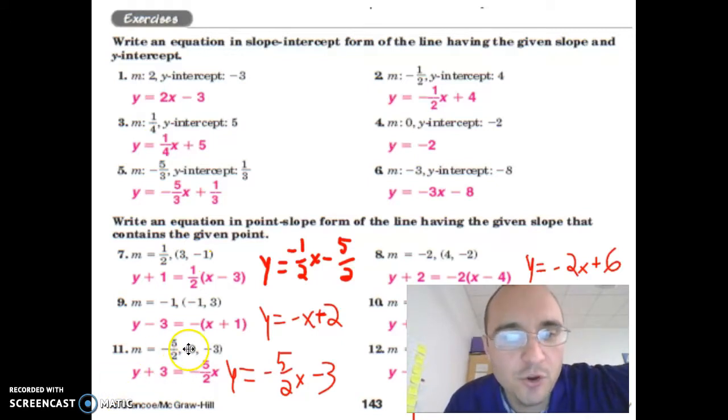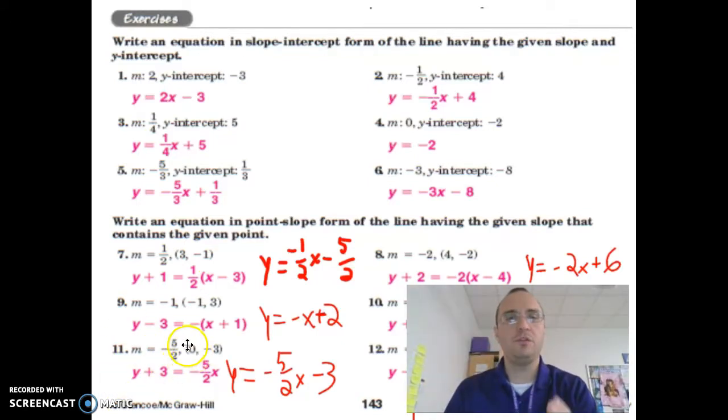One extra thing I'm going to point out is when you get a coordinate and the coordinate is zero, negative three or zero, anytime you have a zero in the x coordinate spot, you actually can just use that as the y intercept. You don't actually have to go through this whole process.